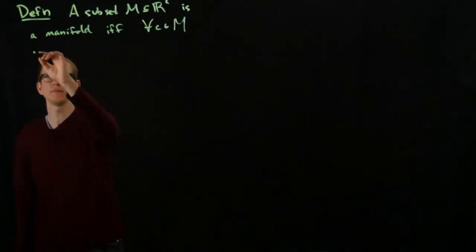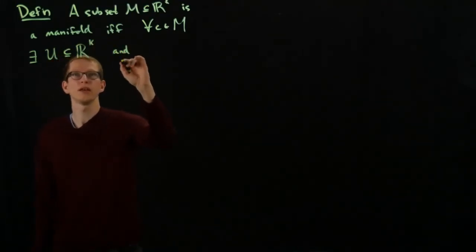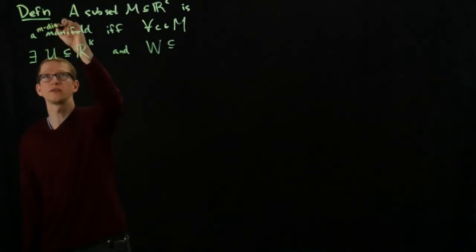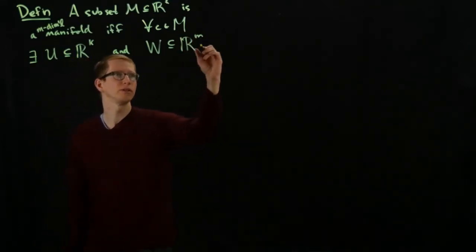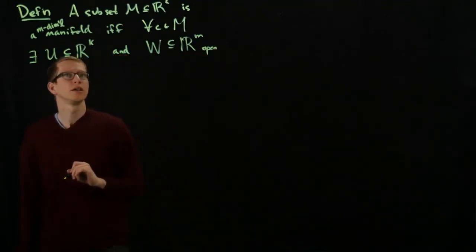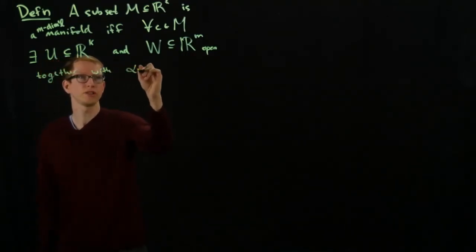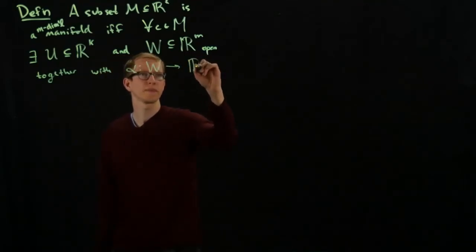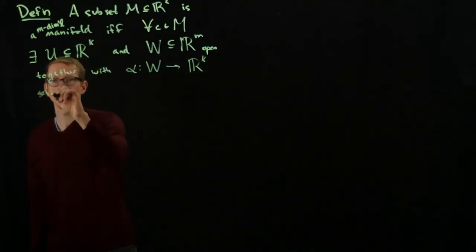A subset M in some Euclidean space R^K is an M-dimensional manifold if and only if for all points C in M, there exists an open set U in R^K and an open set W in R^M, both of these are open, together with a function alpha from W to R^K satisfying the following conditions.